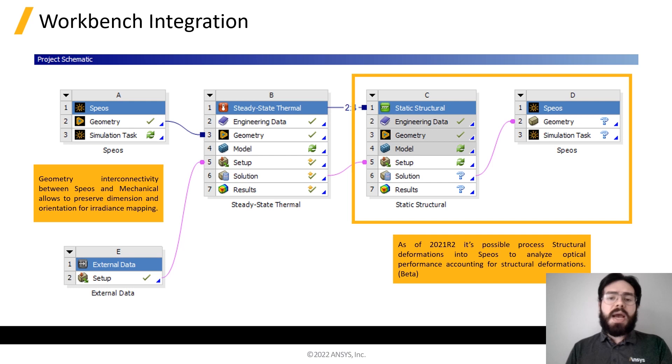If you want to go further and analyze the structural impact of the model, you can directly interconnect the thermal solution to a structural analysis and simulate deformations induced by the thermal and mechanical loads together. As of 2021 R2 product release, you can send back to SPEOS your deformed systems in case you want to evaluate the performance under these conditions. This is very helpful to evaluate optical systems.